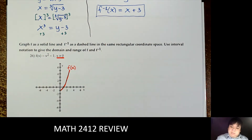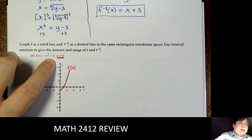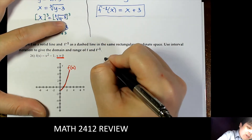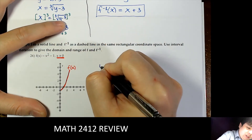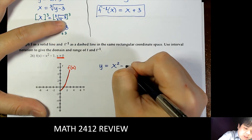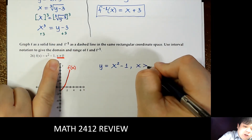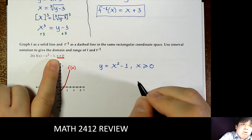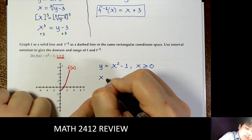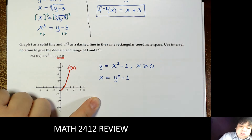Now let's find the inverse. We have f(x) equal to x squared minus 1, with the condition x greater than or equal to 0. Replace f(x) by y, then interchange x and y. The condition is important — we write the condition as x greater than or equal to 0, then after interchanging x and y, we solve for y.